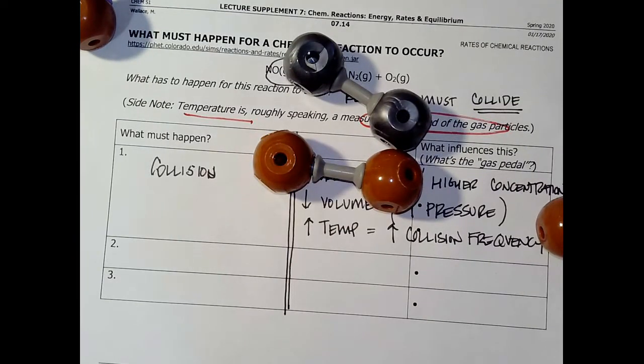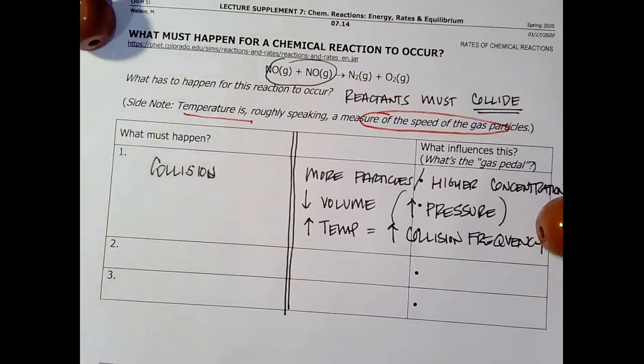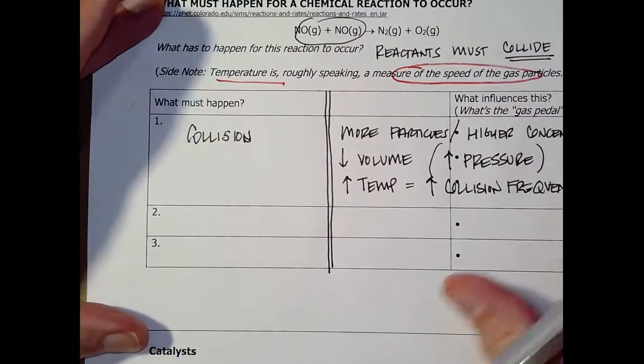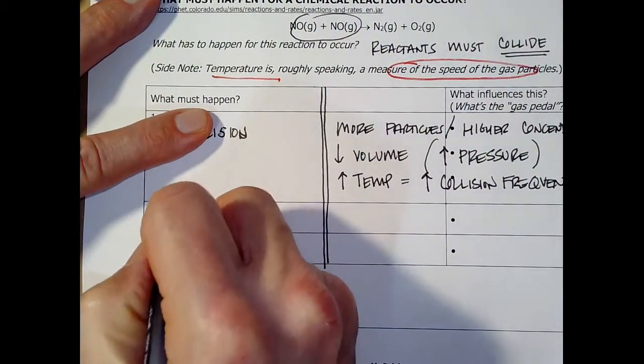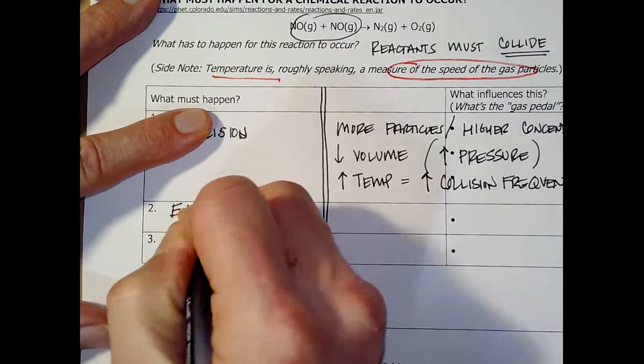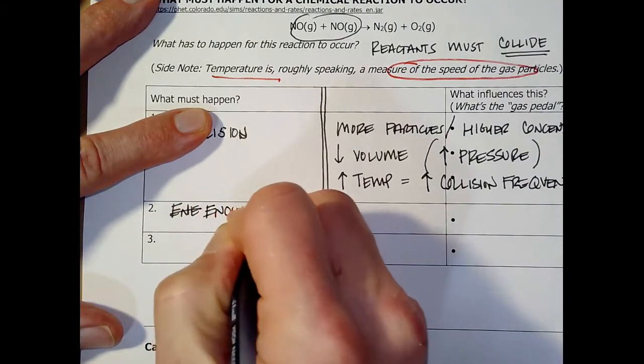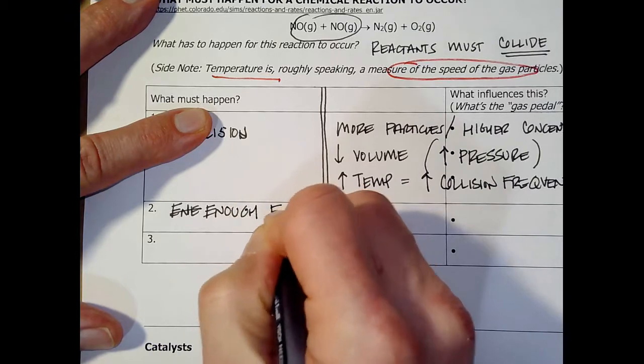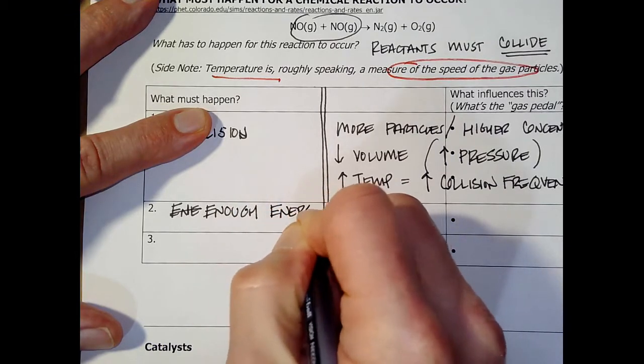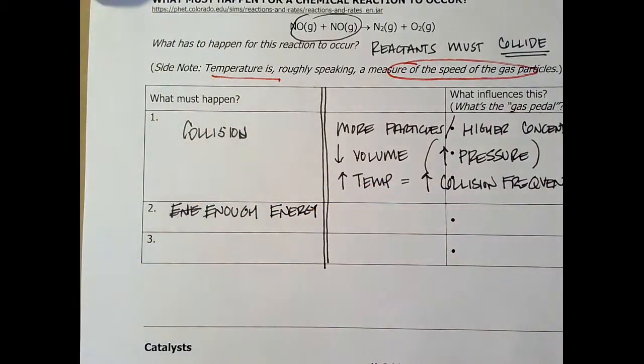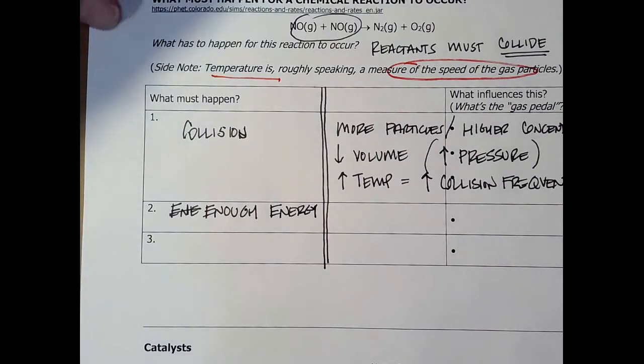Nice animation, huh? Okay. So we say, wait, this other criteria is there must be enough energy. E-N-O-U-G-H energy. That is, if they hit each other gently, no reaction happens. If they hit each other with enough energy, we get a reaction to happen.